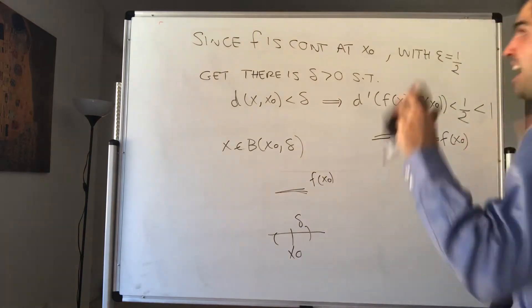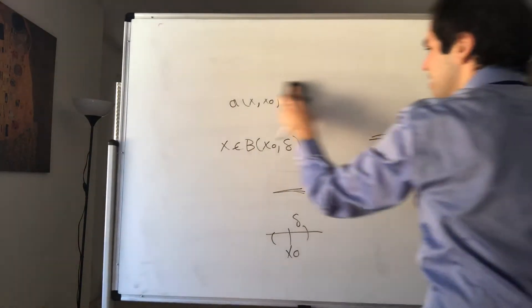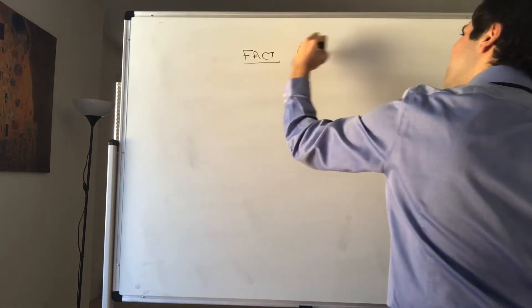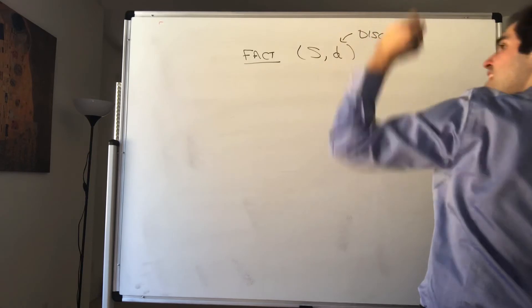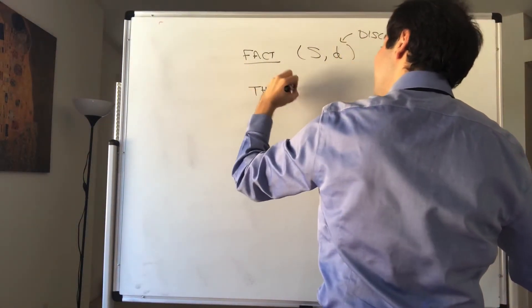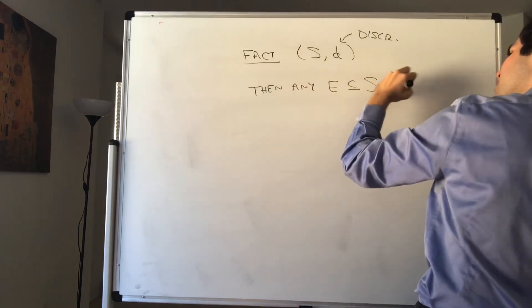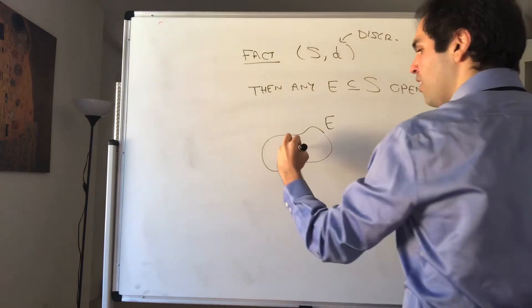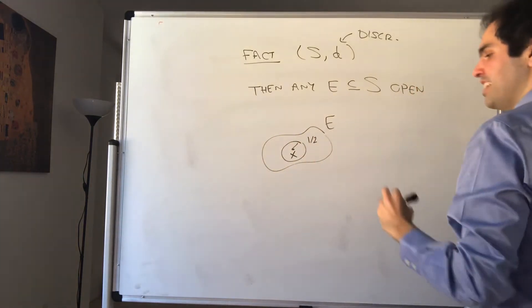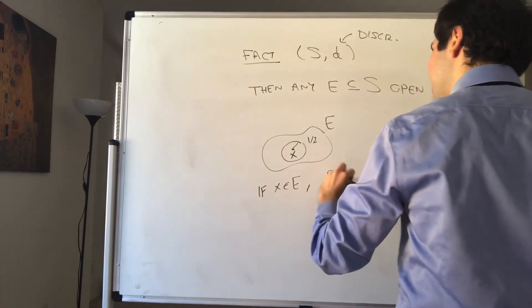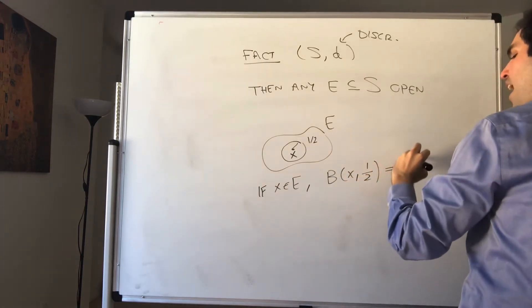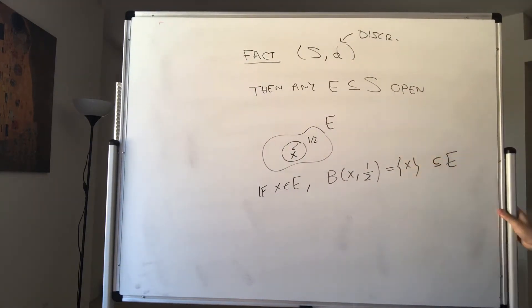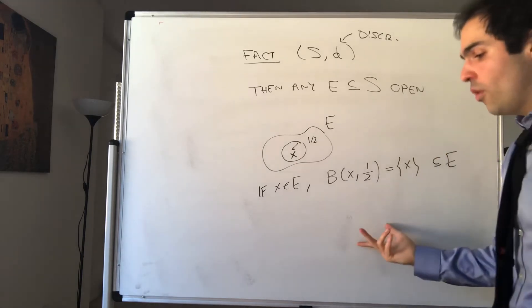If you know topology, here's what is going on. With the discrete metric on S, any subset of S is open. This is easy to show: if x is in E, the ball centered at x with radius one-half is just the singleton {x}, because the only point within distance one-half from x under the discrete metric is x itself, and that point is in E. So the ball is trivially included in E.